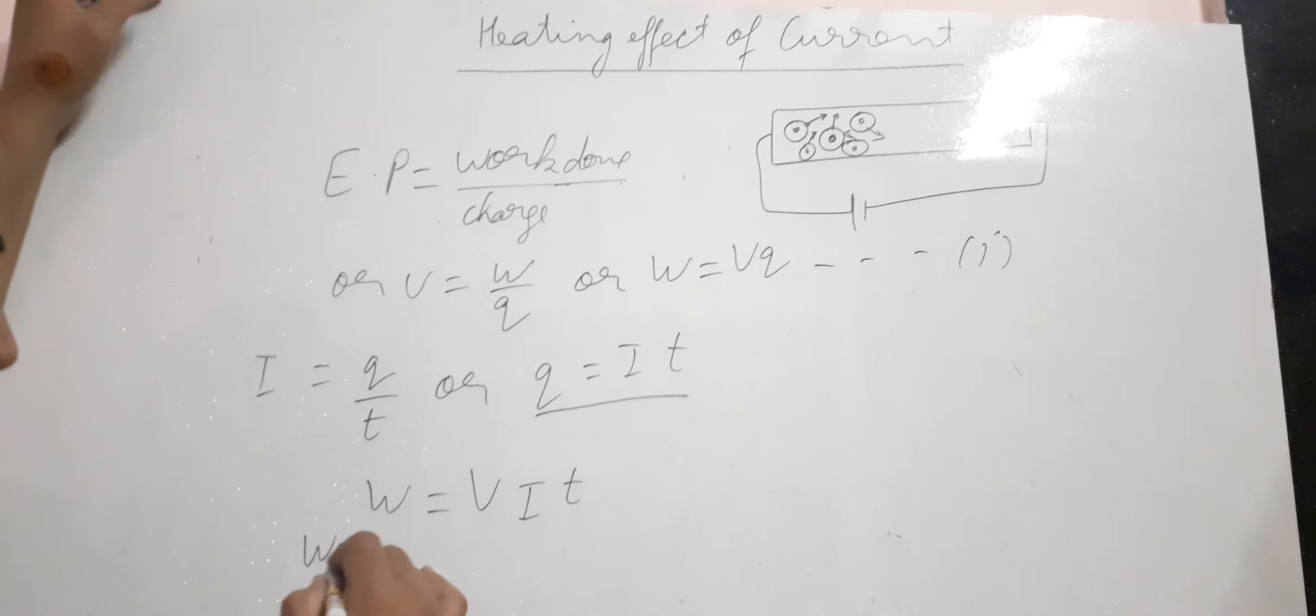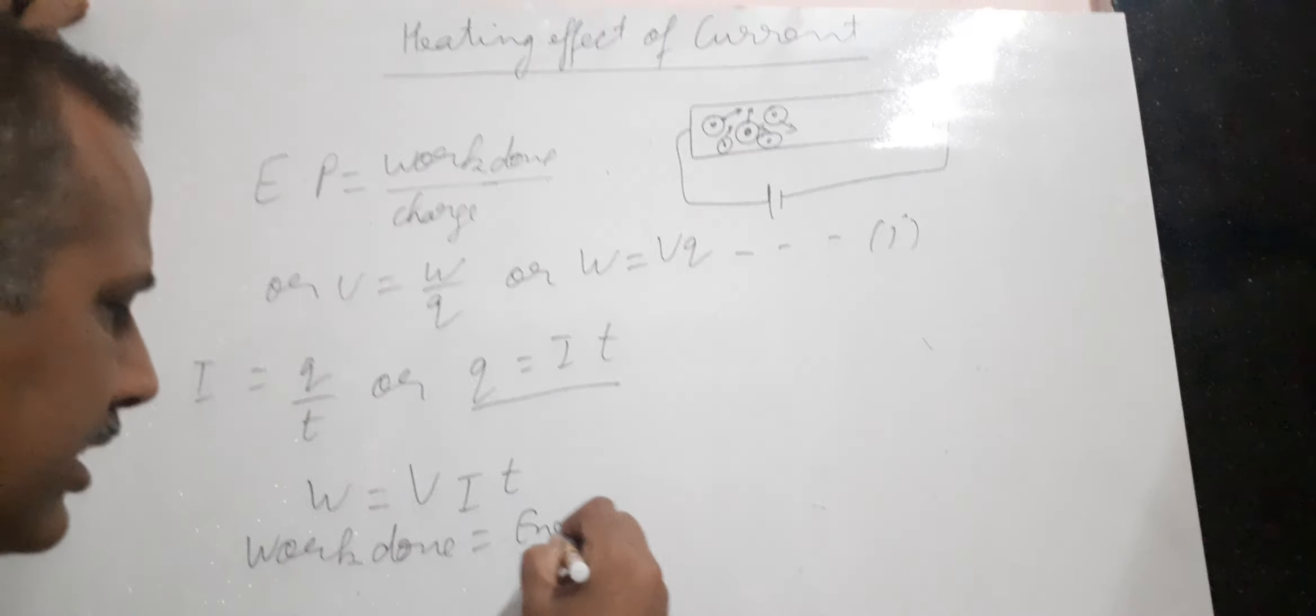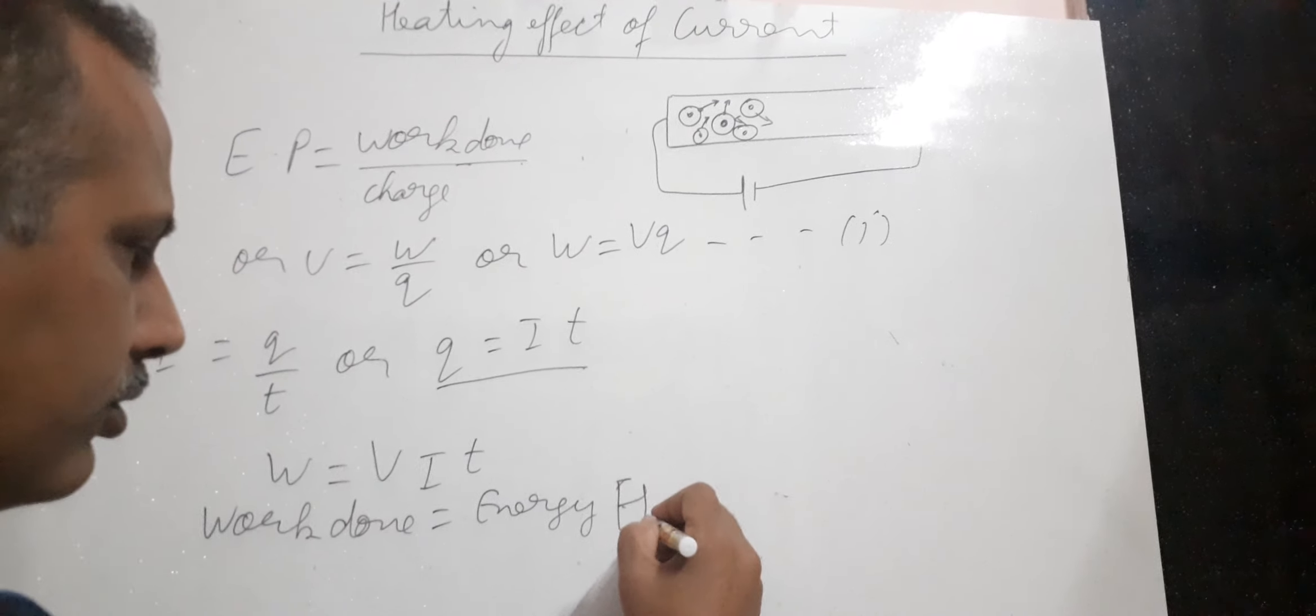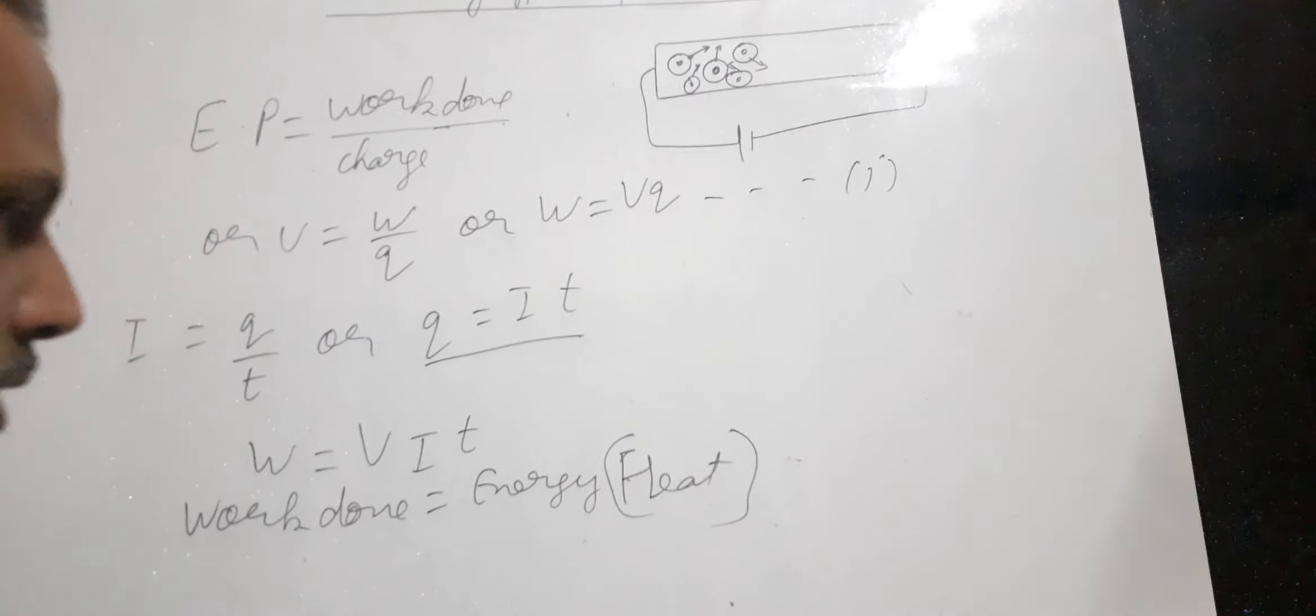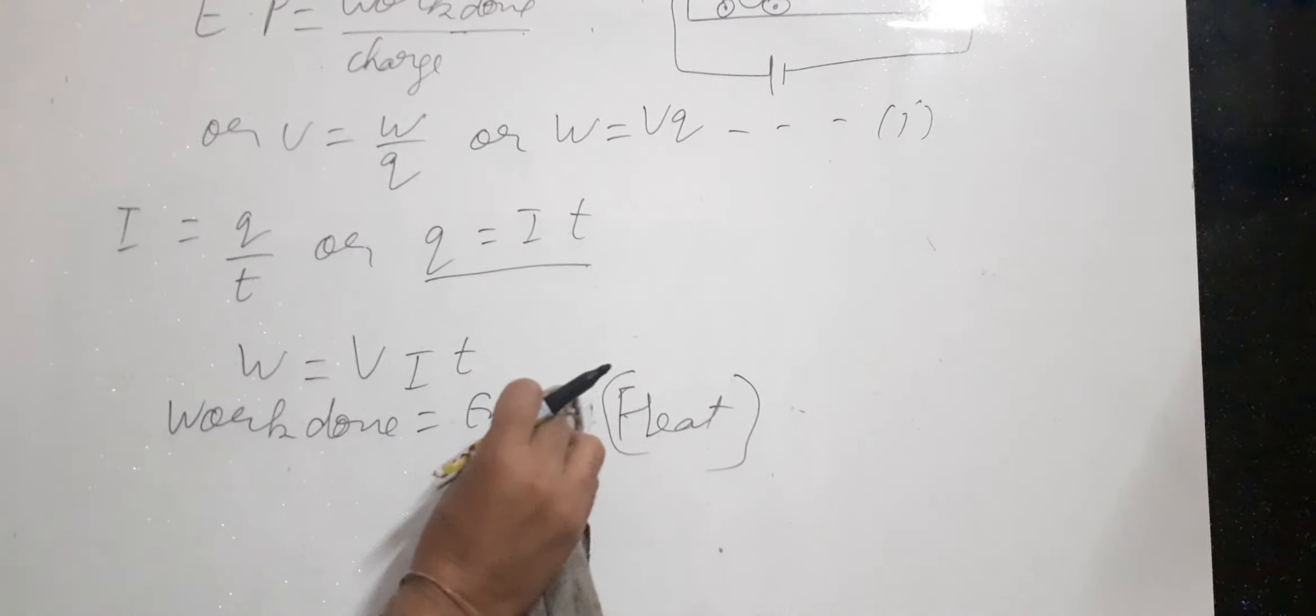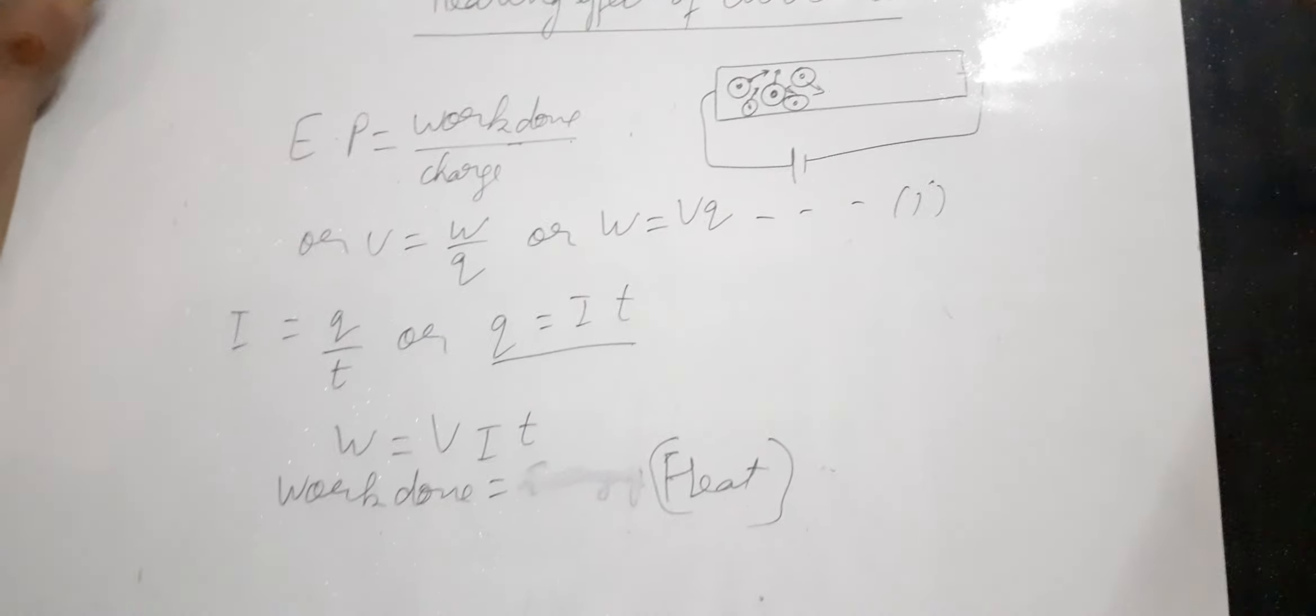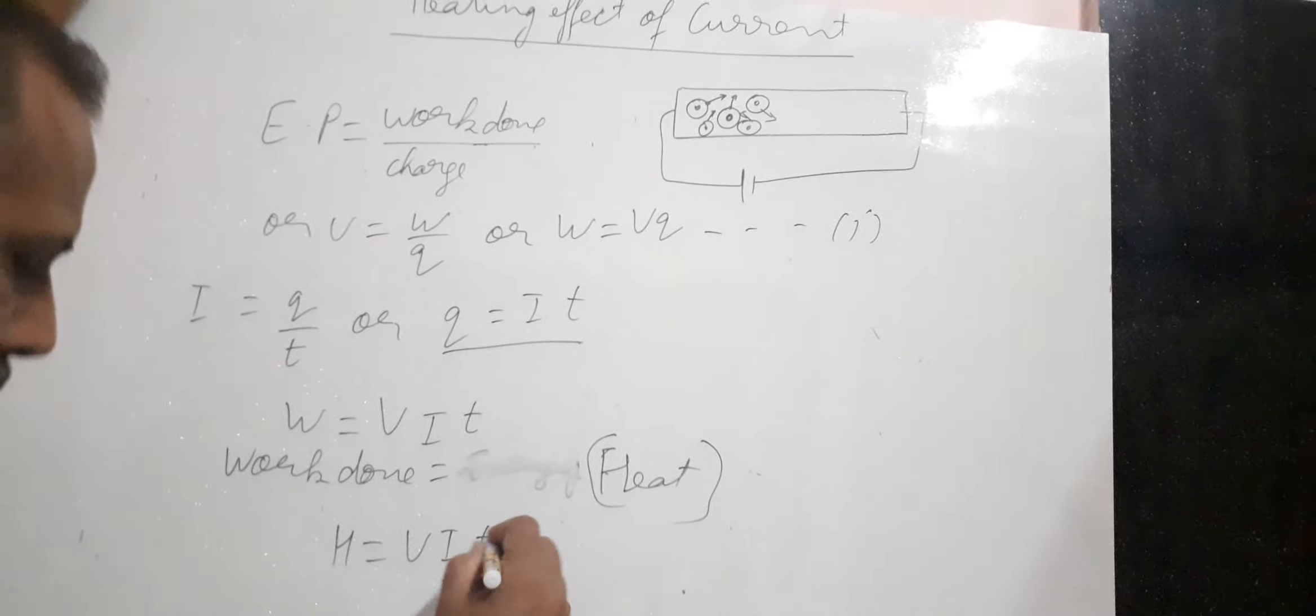As you know, work done is equal to the amount of energy transferred, and this is in the form of heat. So we can write that work done equals the amount of heat produced. The general formula for heat produced is H = V × I × T.